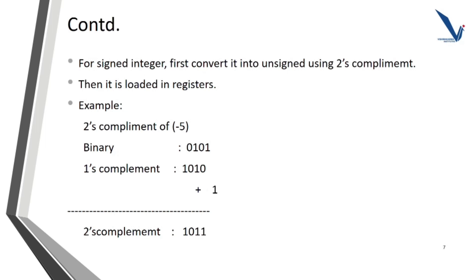For example, if the number is minus 5, then first we take the binary form of plus 5, which is 0,1,0,1. Then the 1's complement of plus 5 is 1,0,1,0. And then for 2's complement, we add 1. Hence, minus 5 becomes 1,0,1,1.